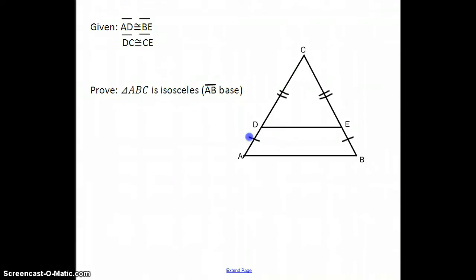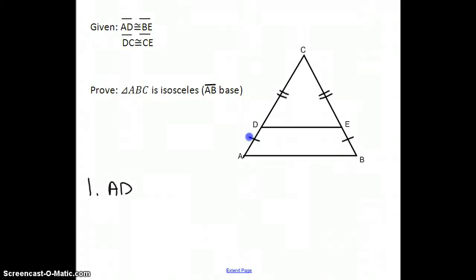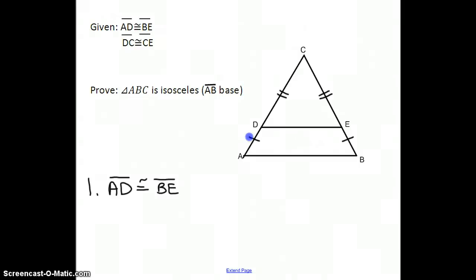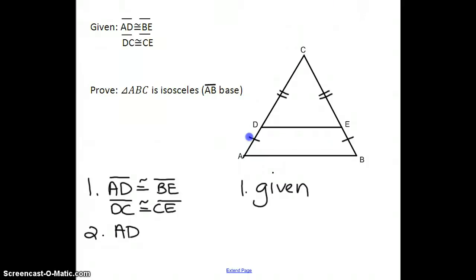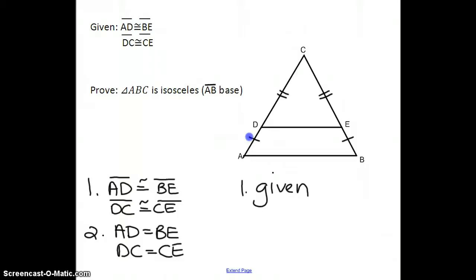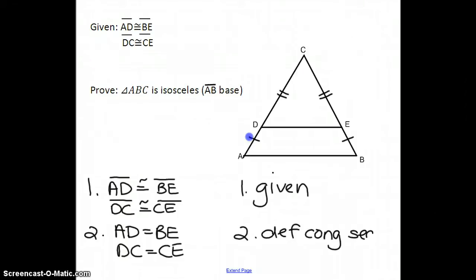Recalling that in order to use the Segment Addition Postulate, we need to say that the lengths of segments are equal. So we start with our given information that we have congruent segments — that would be our given. From here, we change these into equal lengths, because in order to work with the Segment Addition Postulate, we need to be in the language of measurement. So we use the definition of congruent segments.